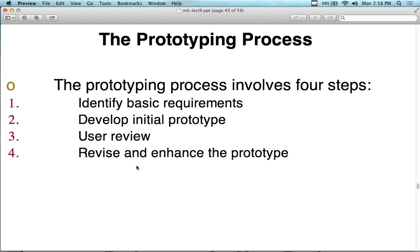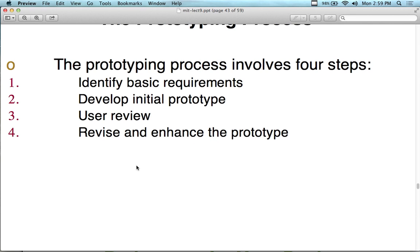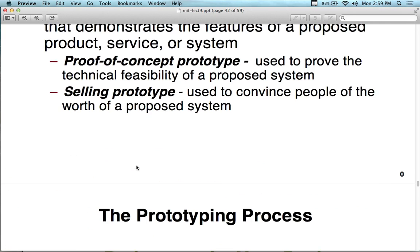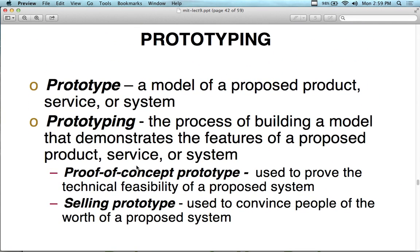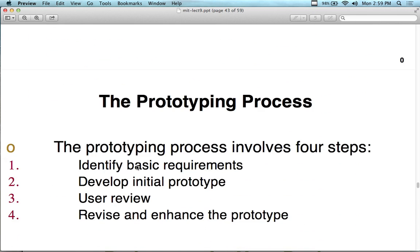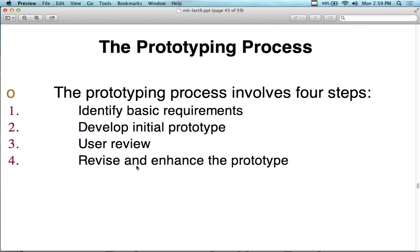The prototyping process involves four steps: identifying basic requirements, developing initial prototypes, user review, and then revising the prototype. Prototyping can also be used during the requirements phase to make a requirement clear — you build a prototype and say 'is this what you're talking about?' You can also test feasibility: here are three different ways we've figured out how to do this — which one do you like better?